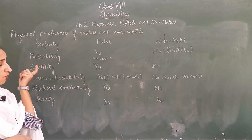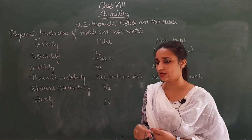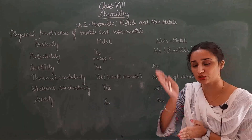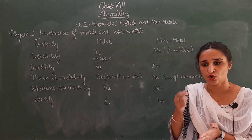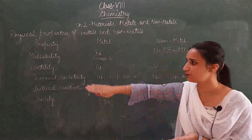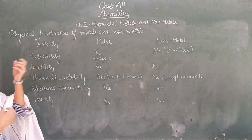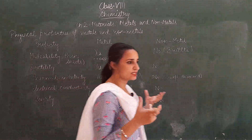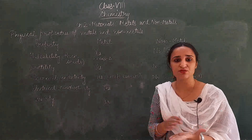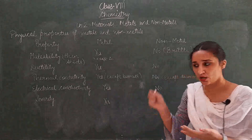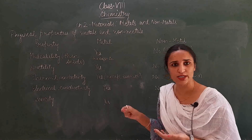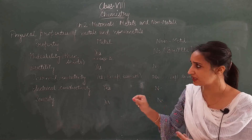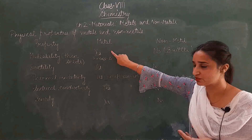Let's start with our first physical property: what is malleability? Have you seen thin sheets? The property of an element from which thin sheets can be made is known as malleability.